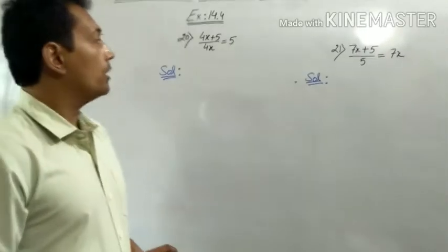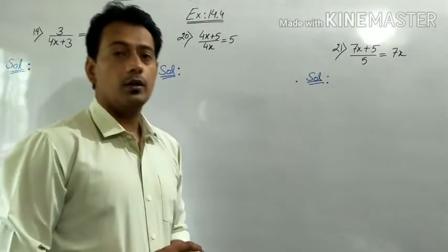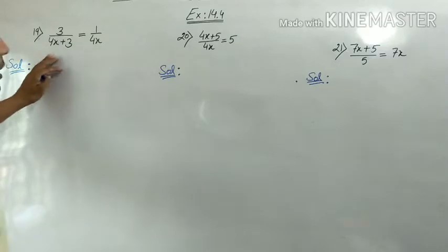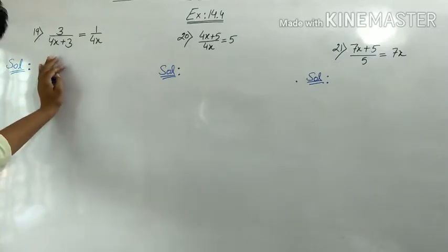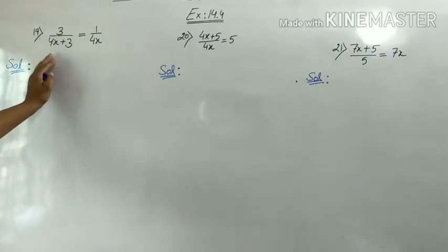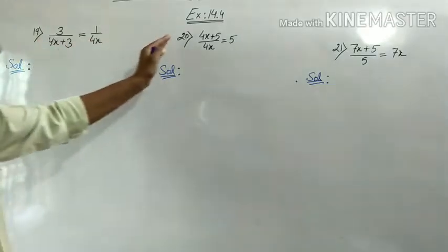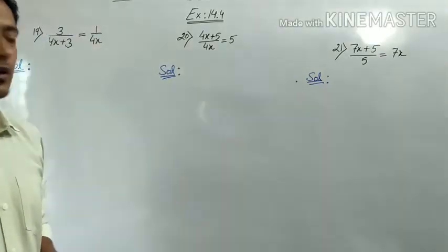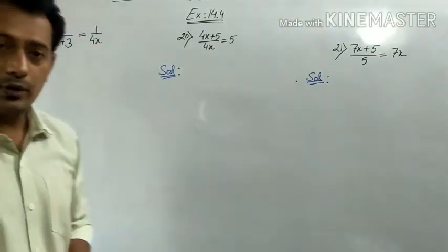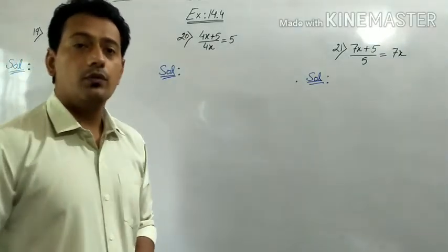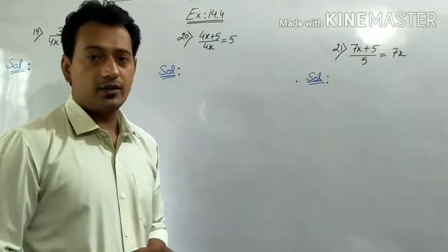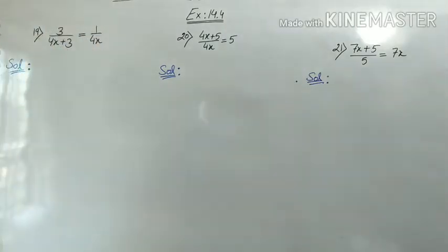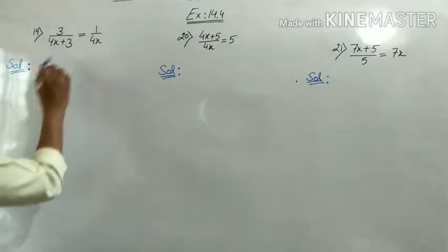Okay students, today we are going to do exercise 14.4. The last 3 sums are remaining: sum number 19, 20, and 21. We will solve these sums and then the chapter will be complete. After that, we will also do some extra sums from RS Agarwal. So first of all, let's solve these remaining sums.